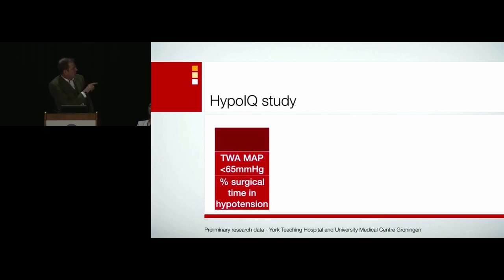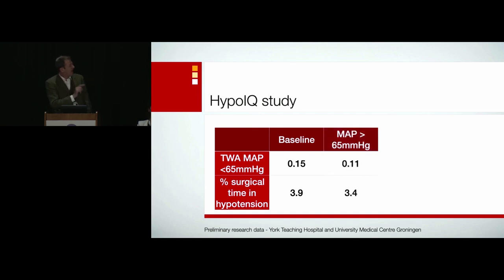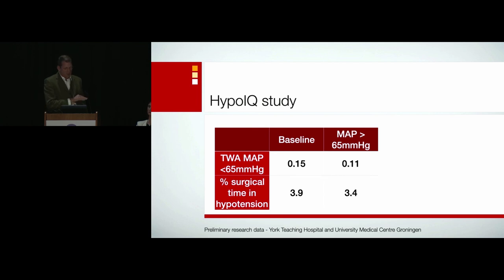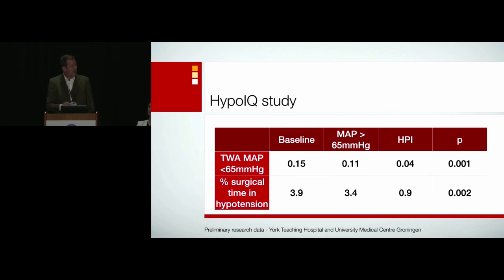This is work we've done in York with Groningen, with Thomas Shireen. This is the same low baseline level of hypotension as the Cleveland Clinic — a time-weighted average of around about 0.15, major non-cardiac surgery, about 4% of time in hypotension. If you just tell people to keep the MAP above 65, nothing changes — we all try to keep blood pressure fine, we come from a centre that knows hypotension is harmful, so simply telling people makes no difference. But if you use advanced algorithms like HPI, you can reduce hypotension to almost nothing: 0.9% of surgical time in hypotension. If the fire alarm goes off and you respond to it, you find yourself outside in clear air. That's because there's 80% compliance with the protocol — use it, use it well, and you can reduce hypotension.